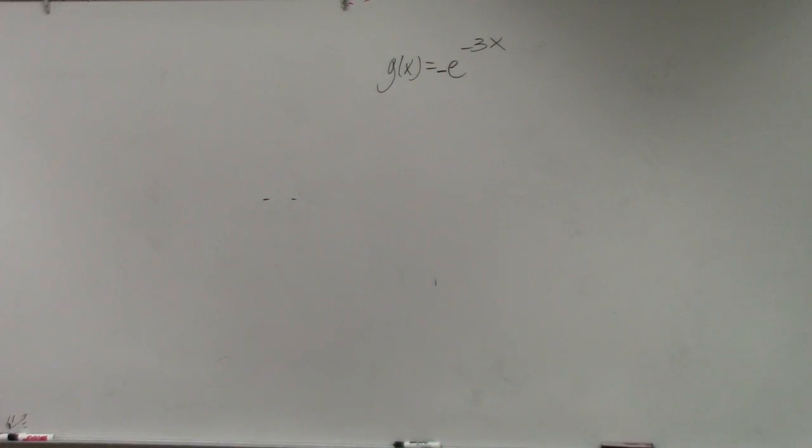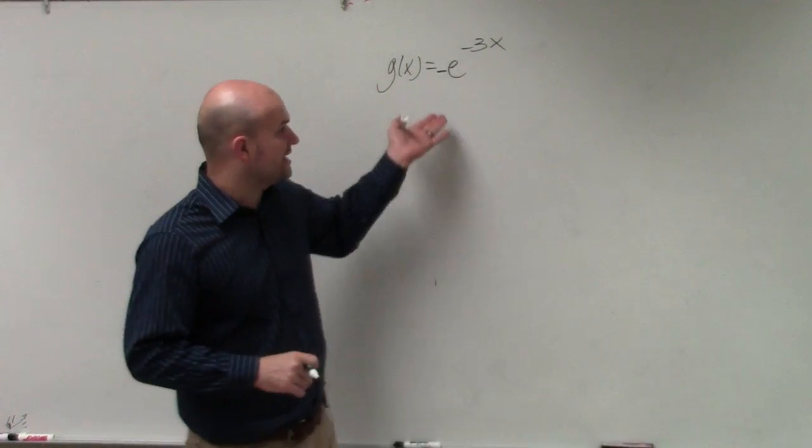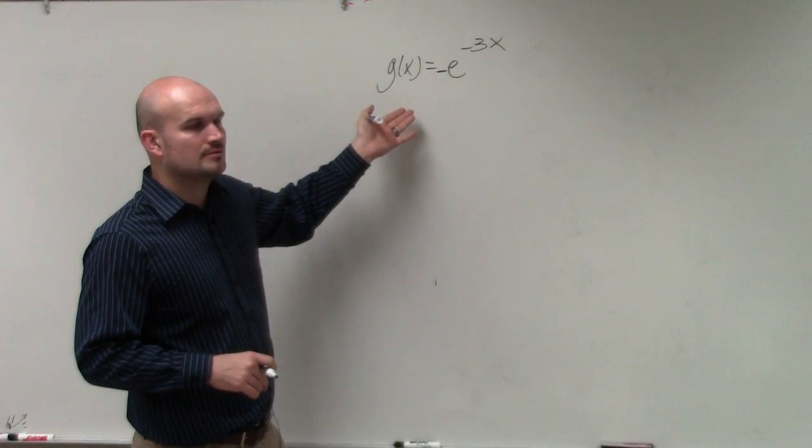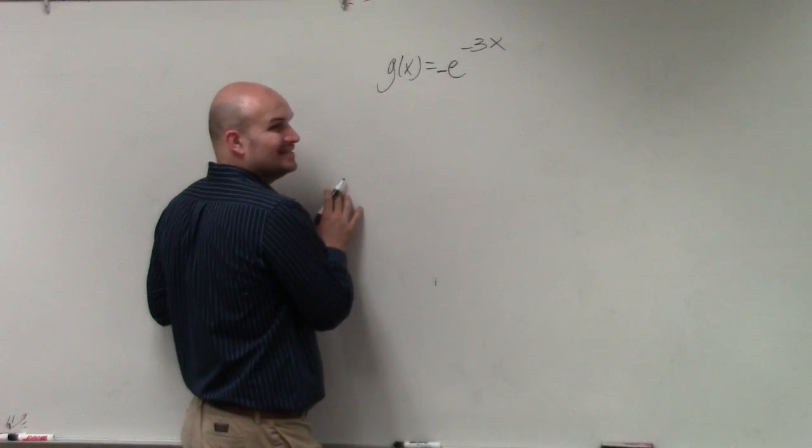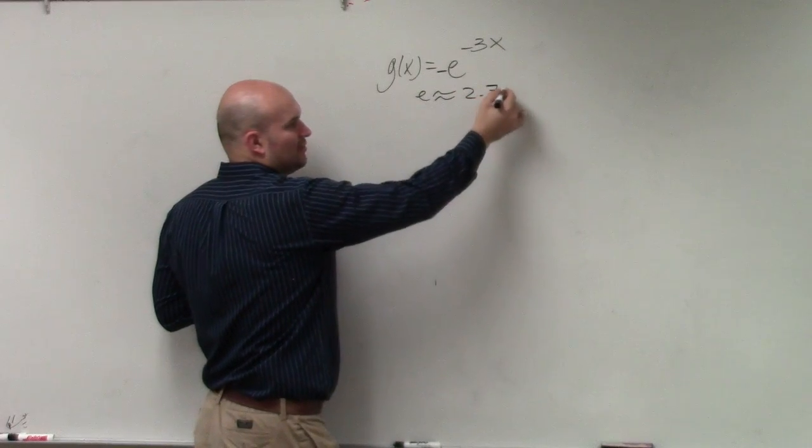All right. In this example, what we're basically going to do is graph this. Now, if you remember, our base is e. Remember, e did not represent a variable. e represented our number, which was approximately 2.71.